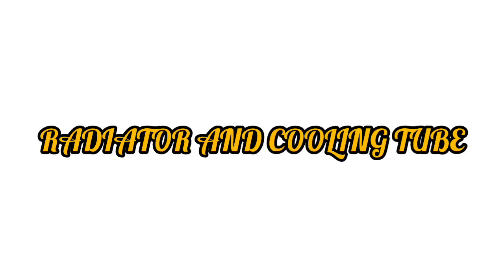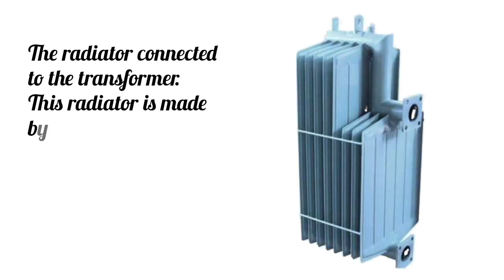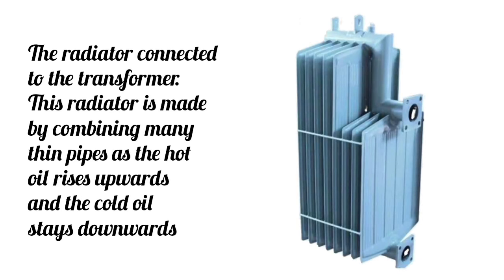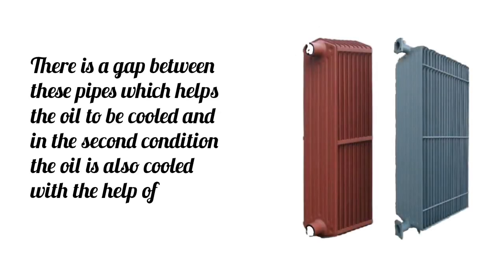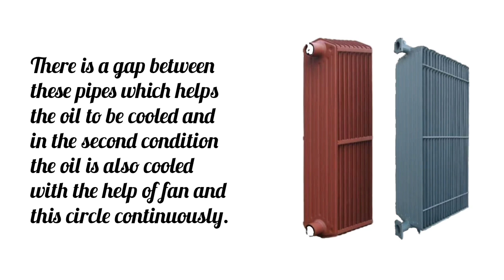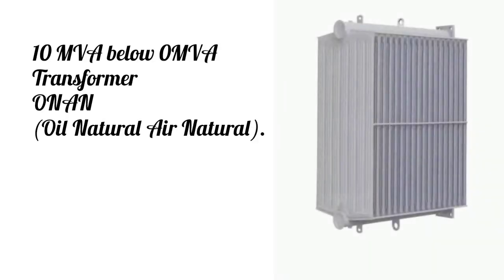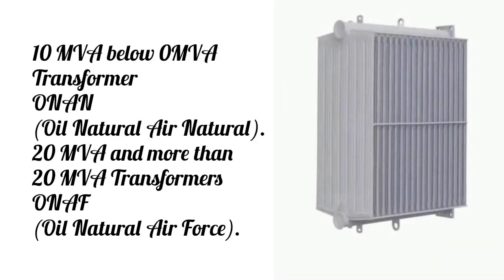Radiator and cooling tube. The radiator connected to the transformer. This radiator is made by combining many thin pipes as the hot oil rises upwards and the cold oil stays downwards. There is a gap between these pipes which helps the oil to be cooled and in the second condition the oil is also cooled with the help of fan and this circulates continuously. 10 MVA and below transformers use ONAN, oil natural air natural. 20 MVA and more than 20 MVA transformers use ONAF, oil natural air forced.